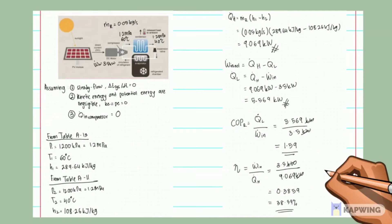To find QH, we use the formula: QH equals mass flow rate times the difference of the first and second enthalpy, giving 9.069 kW. Then to find QL, we use the relation: work in equals QH minus QL, rearranging to get QL equals 5.569 kW. We then calculate COPR, which is QL over work in, giving 1.059. Finally, the efficiency is work in over QH, which equals 0.059.